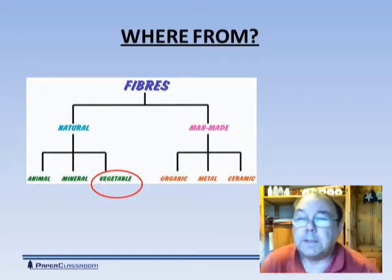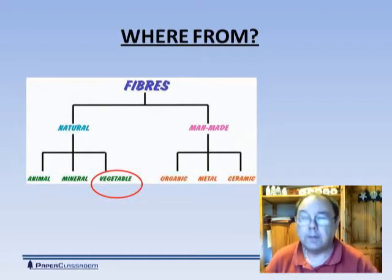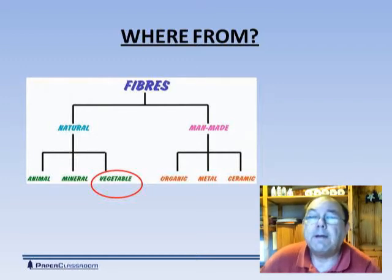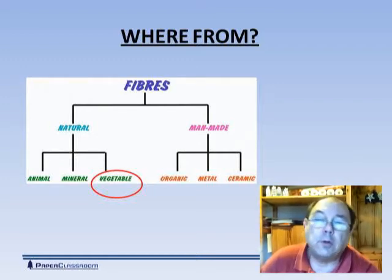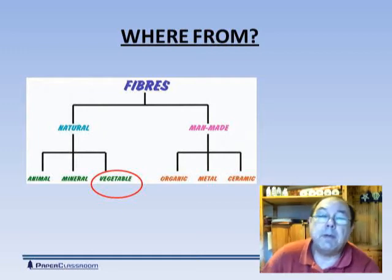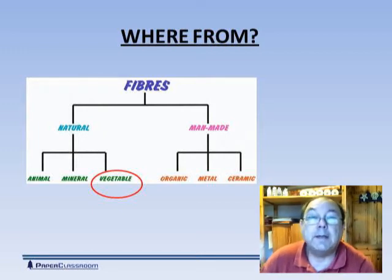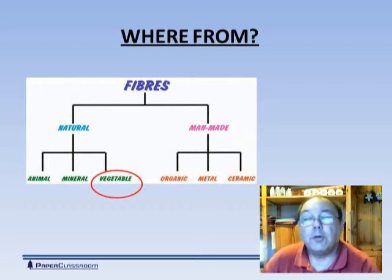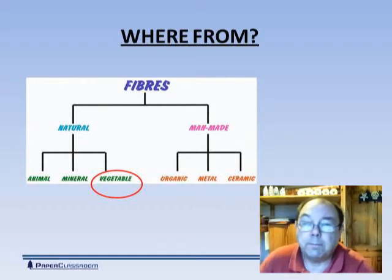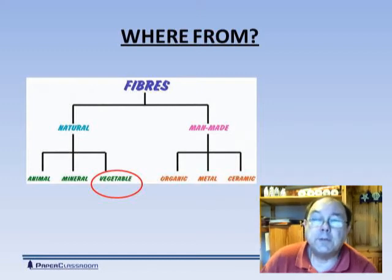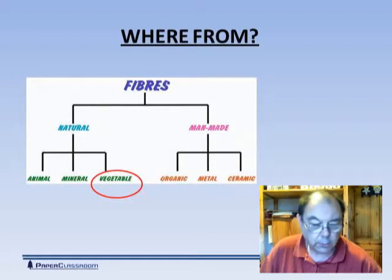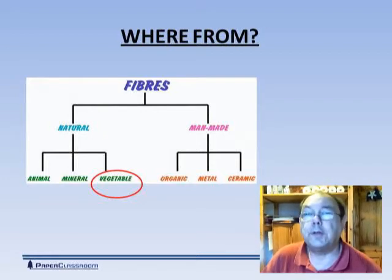This little tree explains exactly where fibres may come from. Fibres we can divide into either natural or man-made fibres. Man-made fibres could be organic, metallic, or ceramic, and natural fibres could be animal, mineral, or vegetable. 95% of all fibres used in papermaking are vegetable fibres, so they're the ones we're going to concentrate on.